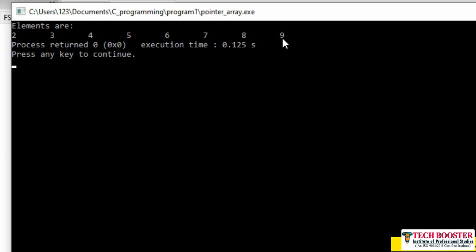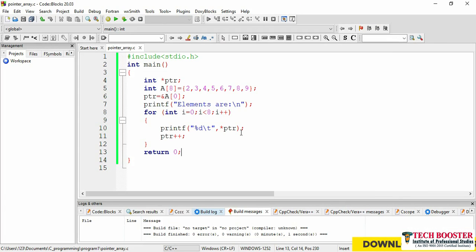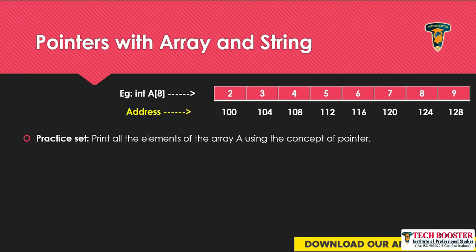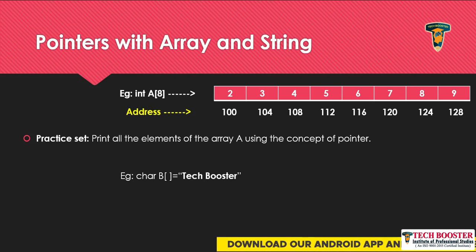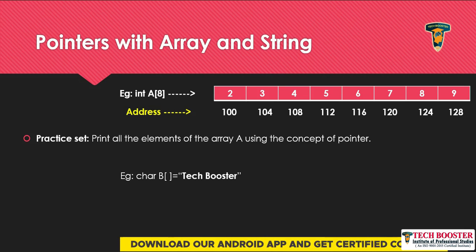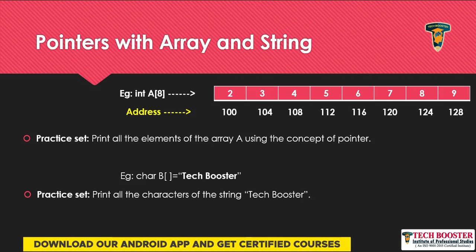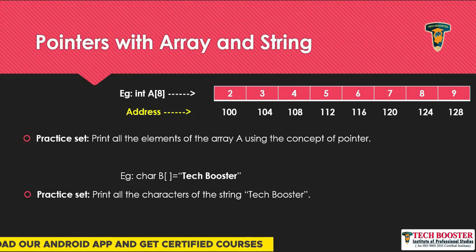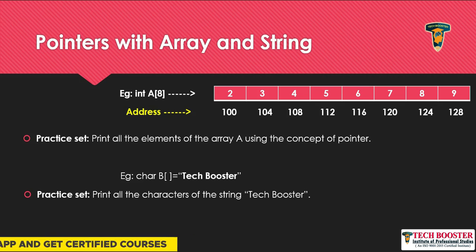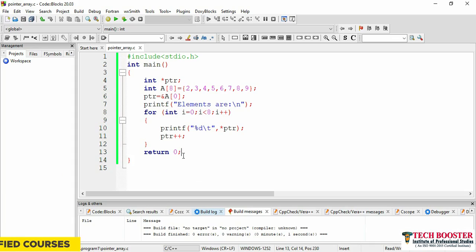Now that we're done with arrays, let's move back to the slide and check out how to use pointer with string. To work with string, I've considered a string called 'tech booster' of type char. The practice set is: print all the characters of the string 'tech booster' using the concept of pointer. Let's open Code::Blocks and try this out.